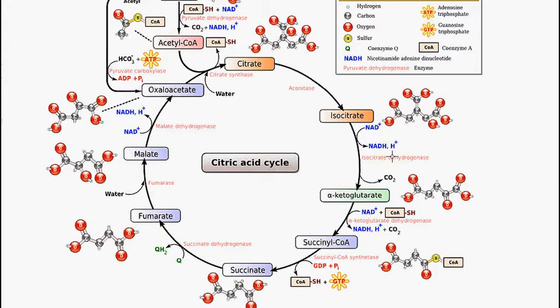This step is a rate-limiting step of the TCA cycle. The enzyme isocitrate dehydrogenase is allosterically activated. It's activated by ADP and calcium ions, and it's inhibited by ATP and NADH.